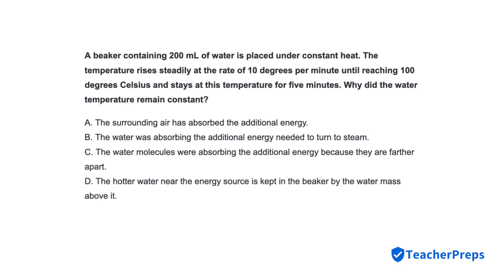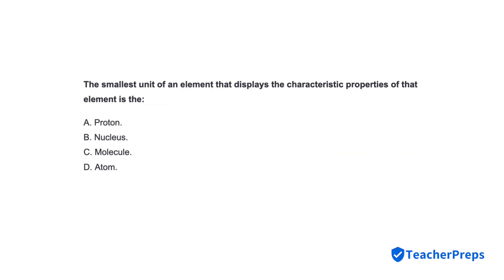A beaker containing 200 milliliters of water is placed under constant heat. The temperature rises steadily at the rate of 10 degrees per minute until reaching 100 degrees Celsius, and stays at this temperature for five minutes. Why did the water temperature remain constant? Correct response: Letter B — the water was absorbing the additional energy needed to turn to steam.